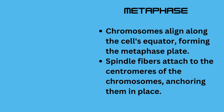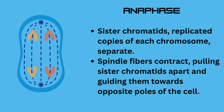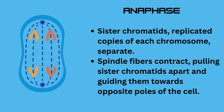In anaphase, sister chromatids — replicated copies of each chromosome — separate. Spindle fibers contract, pulling sister chromatids apart and guiding them towards opposite poles of the cell.